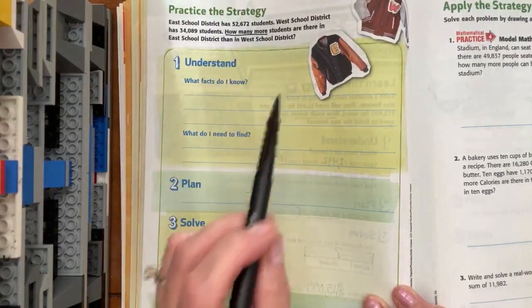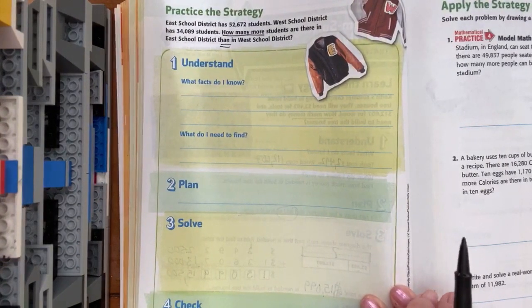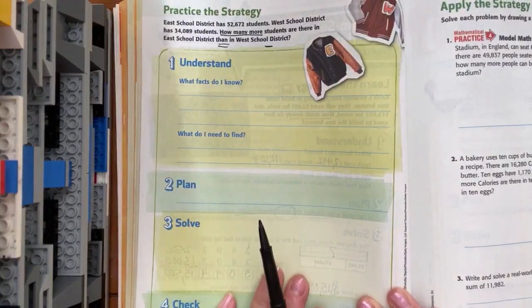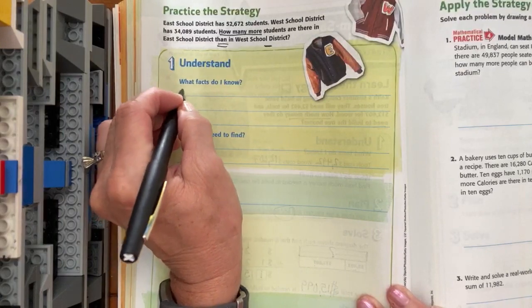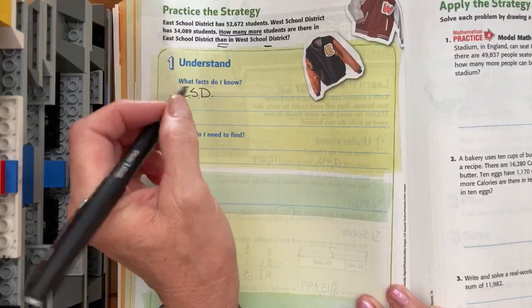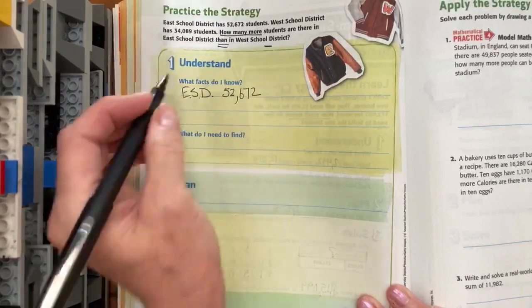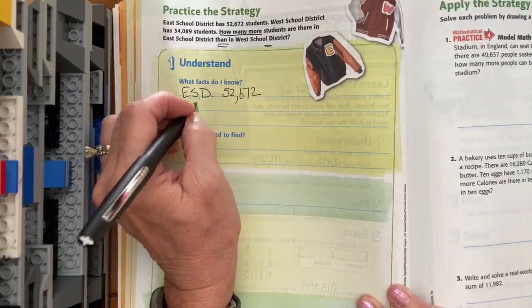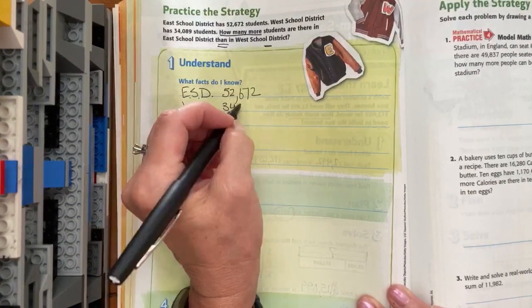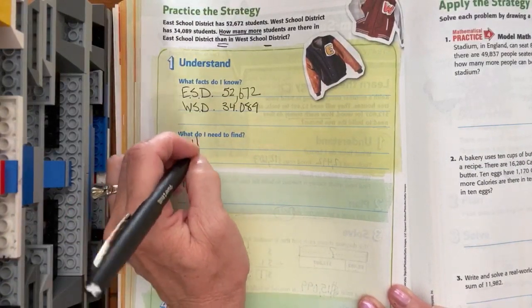That right there tells us at some point we're going to be subtracting because we are comparing. It says 'than,' so I'm going to say East School District - I'm going to work smarter not harder - and I'm going to write down that they have 52,672. I'm going to abbreviate West School District: 34,089. What do we need to find? We need to find how many more...